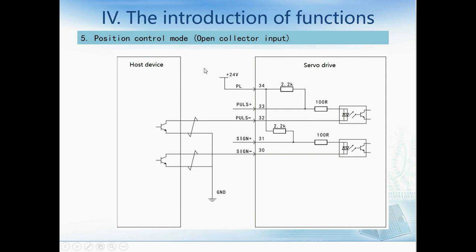This is another kind of wiring — the open collector input. Because there is no 24V power supply in the servo drive, we need to use an external power supply. For example, if the host device is a PLC, we can use the 24V power supply in the PLC. We can treat one wire as Y0 and another as Y1. Y0 controls the direction and Y1 outputs the pulse to control speed.